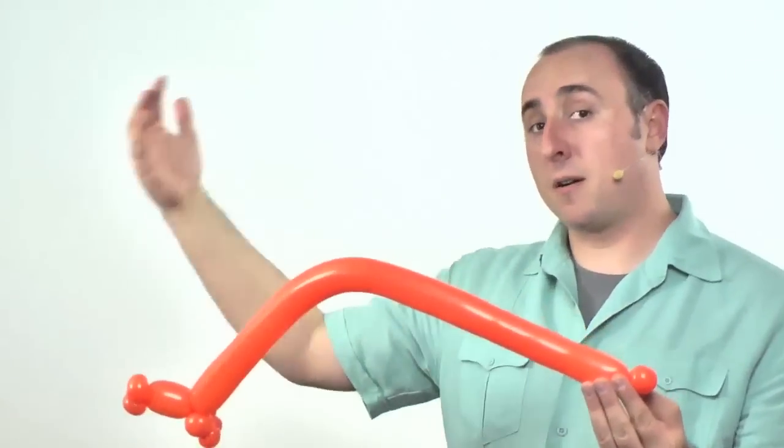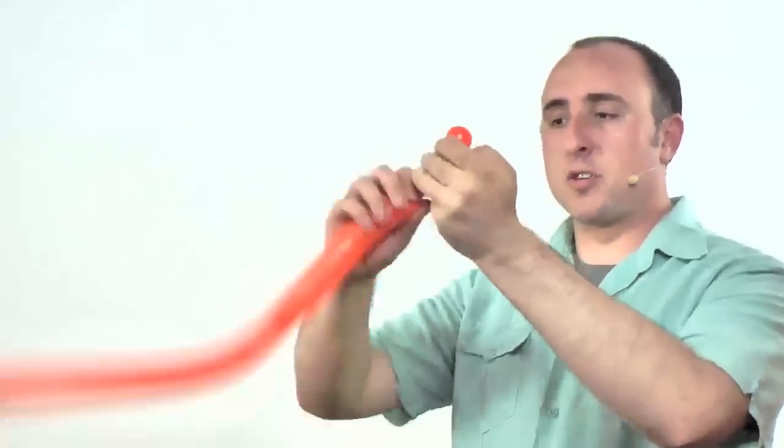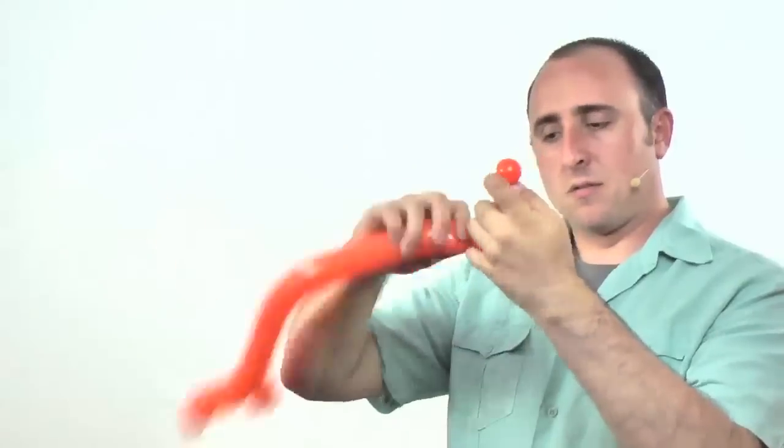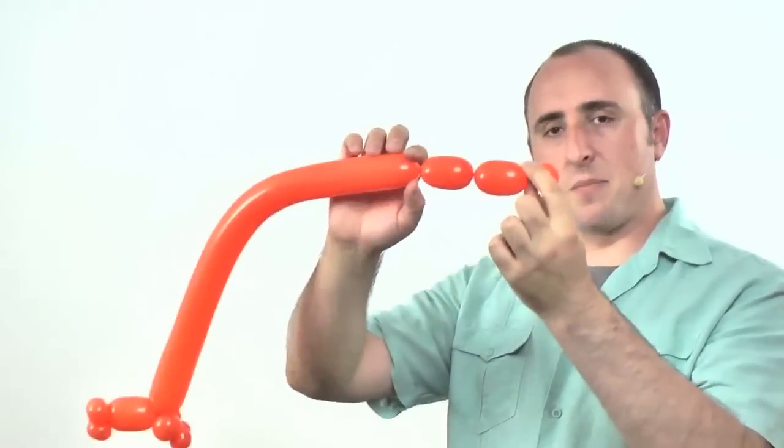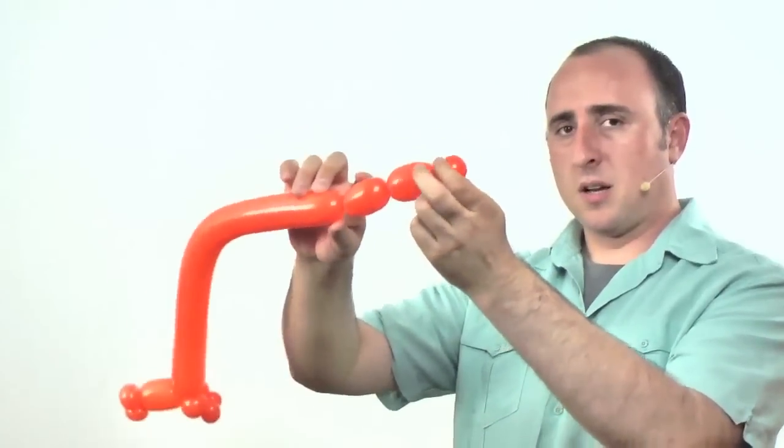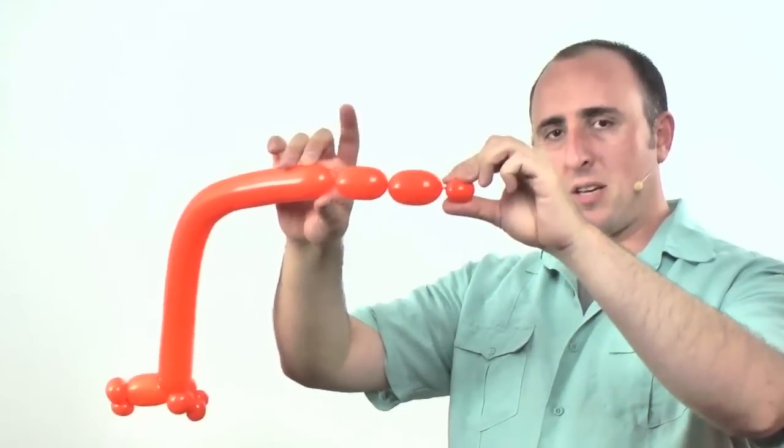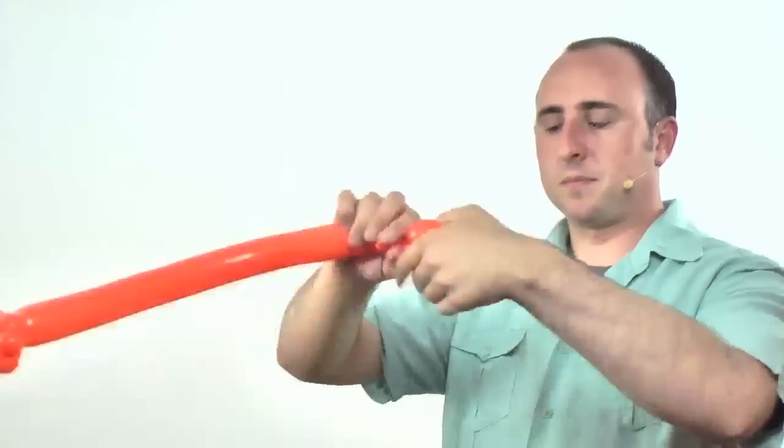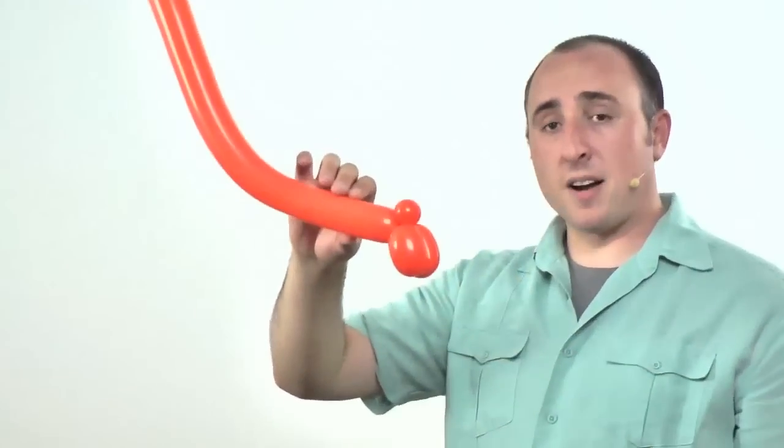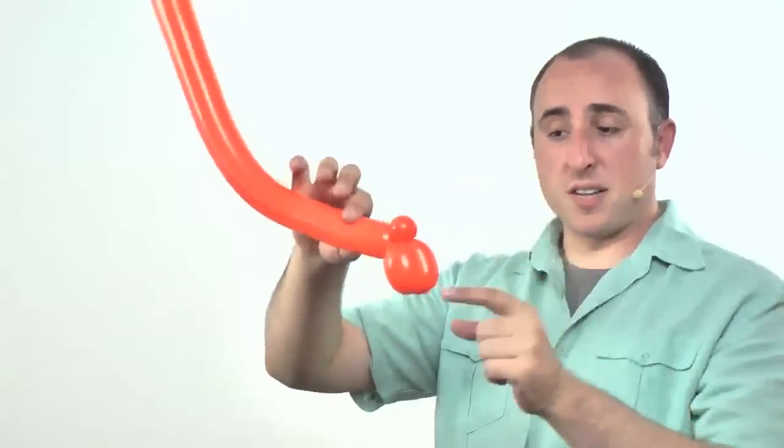Now from the end I'll twist two small legs. They should be about the same size. I'm going to twist where we twisted that bubble here on the end into where we twisted that leg there, and there we have the hind legs.